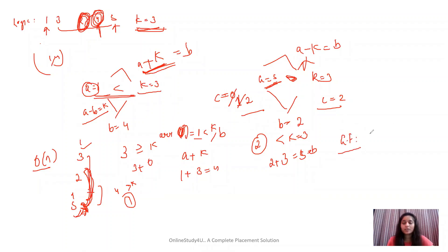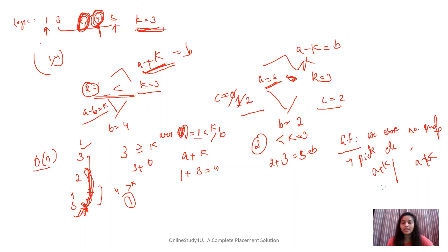In general, the approach is: store all numbers in an unordered map. Then pick one element at a time. We check either for a plus k or for a minus k depending on whether a is less than k or greater than k. If that element is present in the map, increase the count; otherwise move to the next element. After processing an element, we mark it unavailable in the map.